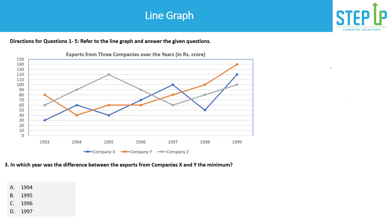The third question asks: in which year was the difference between exports from company X and company Y the minimum? X is the blue line and Y is the orange one. Options given are 1994, 1995, 1996, and 1997, so we only look at those years. In 1994, the difference is about 20 crores; in 1995, it's also 20 crores. In 1996, it's only 10 crores. So 1996 is clearly the minimum — a very quick five-second question.